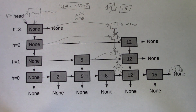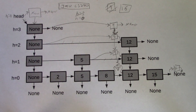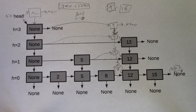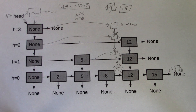I'm not going to work through the algorithms for removing a node or finding an existing node in the skip list. Insertion is really the most complicated operation, so if you get insertion down, I think you'll find that the other two should follow pretty easily.